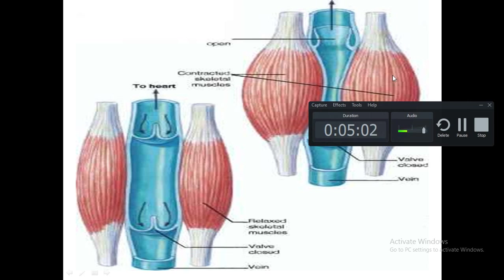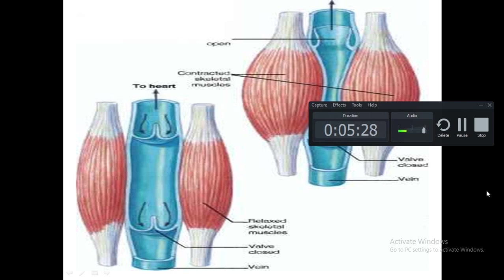The muscle pump works by contraction of the muscle compressing upon the leg veins, so the blood moves in one direction only because of the presence of valves, and not in the reverse direction. When the muscle relaxes, blood from below fills that portion of the leg vein, and when the muscle contracts again it pushes the blood upward towards the heart.